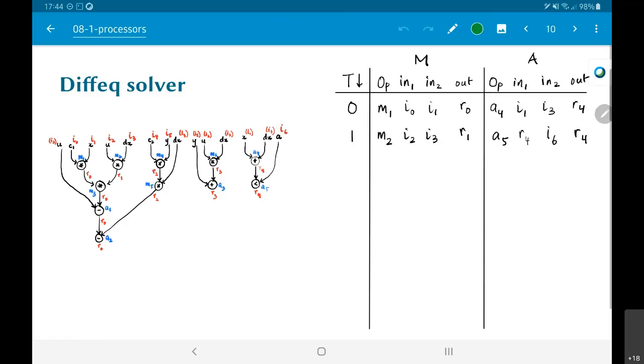Next time instant, at time 1, I can do for example M2. I could also have done M4 or M6, but I'm just picking M2. What are the inputs to M2, I2 and I3? Its output is R1.